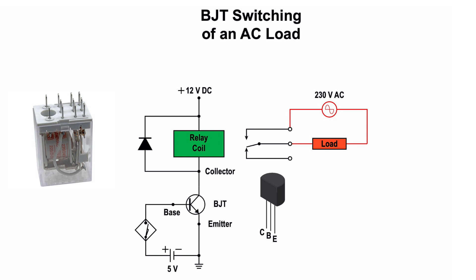When the proximity sensor switch closes, it establishes a small base current that drives the collector fully on to the point where it is said to be saturated, as it can't pass any more current. The relay coil is energized, and its normally open contacts close to switch on the load. When the transistor is in the on state, the collector current is at its maximum value, and the voltage across the collector and emitter drops to near zero, while the relay coil increases to approximately 12 volts.